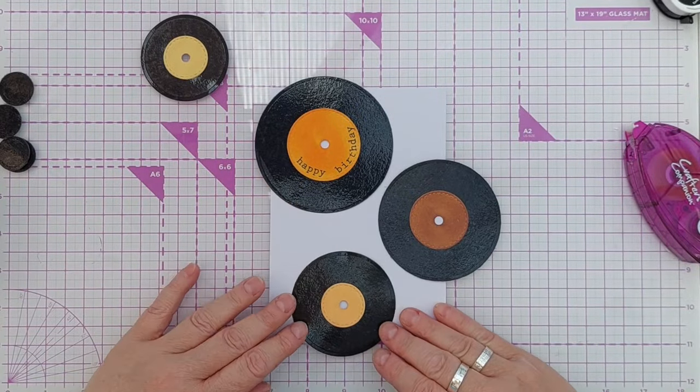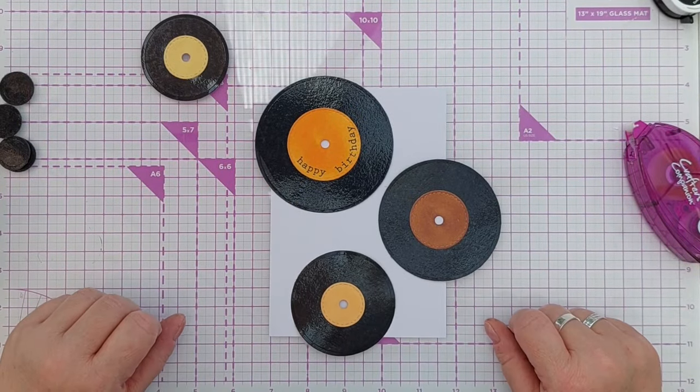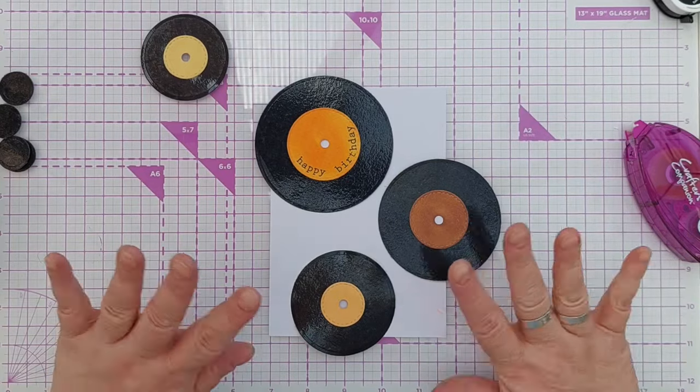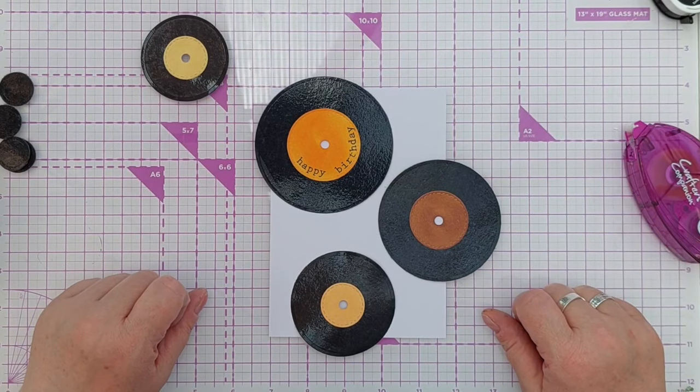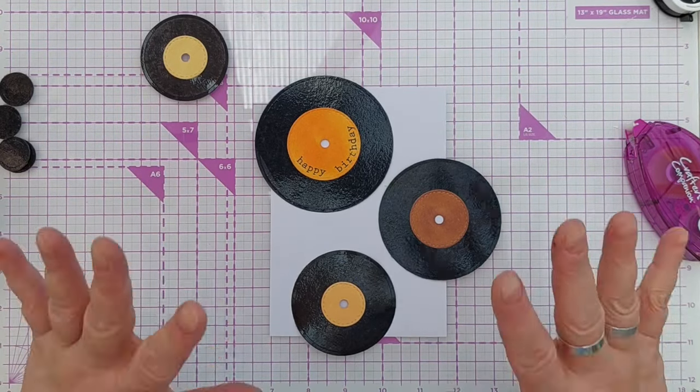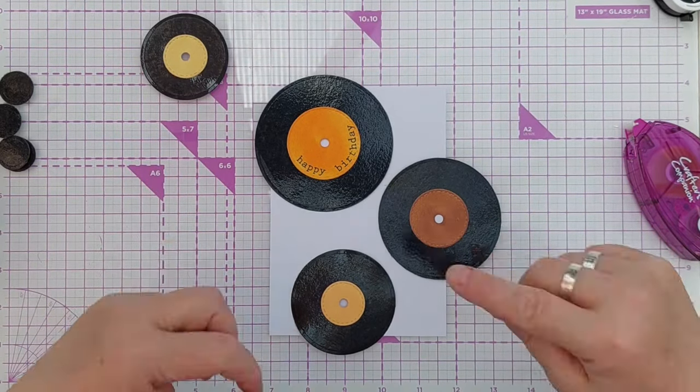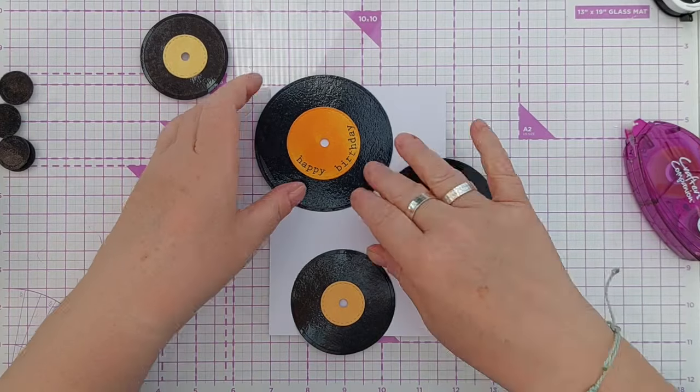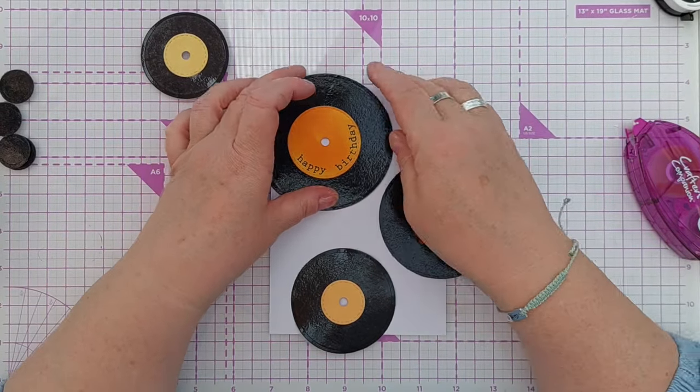So I'm thinking something like that. This is a panel of smooth white cardstock that is four and three-quarters by six and three-quarter inches, so it'll sit on that five by seven card blank with a little border around the outside. And I think I'll pop this one up on foam tape.